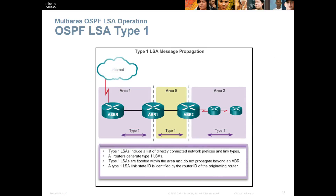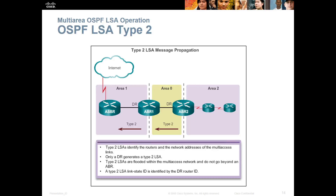Type 1 LSAs are between routers. They include a list of directories, connected network prefixes, and link types. All routers generate Type 1 LSAs, and the link-state ID is identified by the router ID of the originating router. Type 2 LSAs identify the routers on the network and the addresses for the multicast links. Only a Designated Router, or DR, generates Type 2. Type 2 LSAs are flooded within the multi-access network and do not go beyond an Area Border Router.